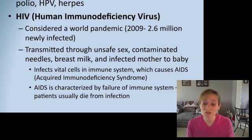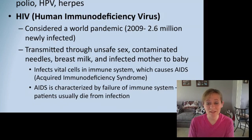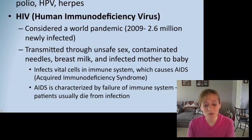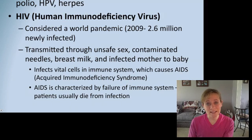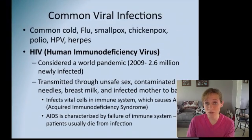HIV actually attacks our immune cells. Because of that, it progresses to such a state where the patient develops AIDS. First you get infected with the virus, then the virus attacks your immune system and you develop acquired immunodeficiency syndrome. So HIV is the virus, and AIDS is the disease that comes after it — they're not the same thing. I really want you to leave this class knowing the difference between HIV and AIDS. AIDS is characterized by a failure of the immune system, and patients usually end up dying because they have some infection or cancer that their immune system cannot fight.